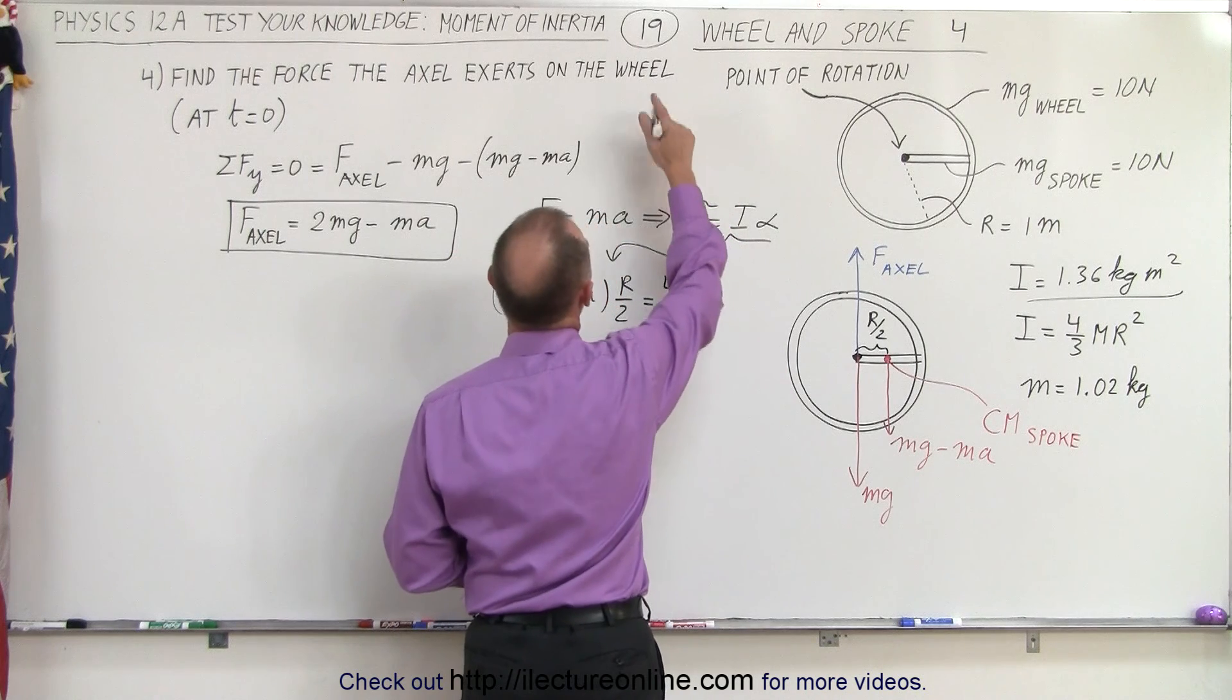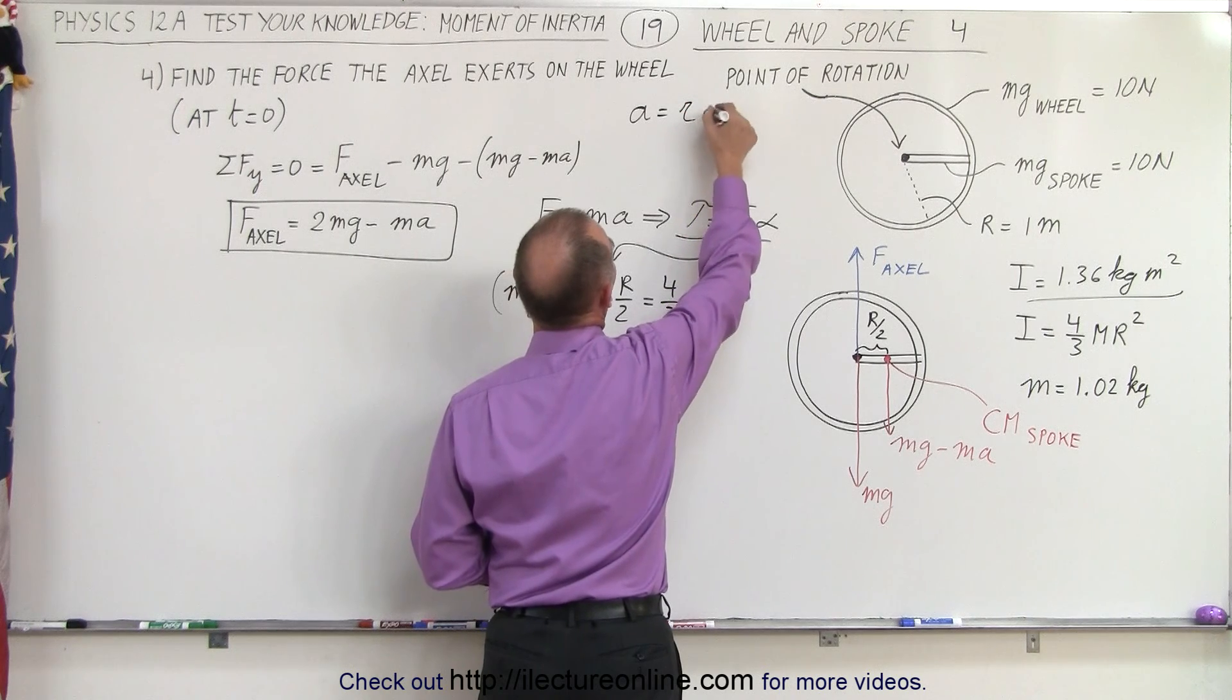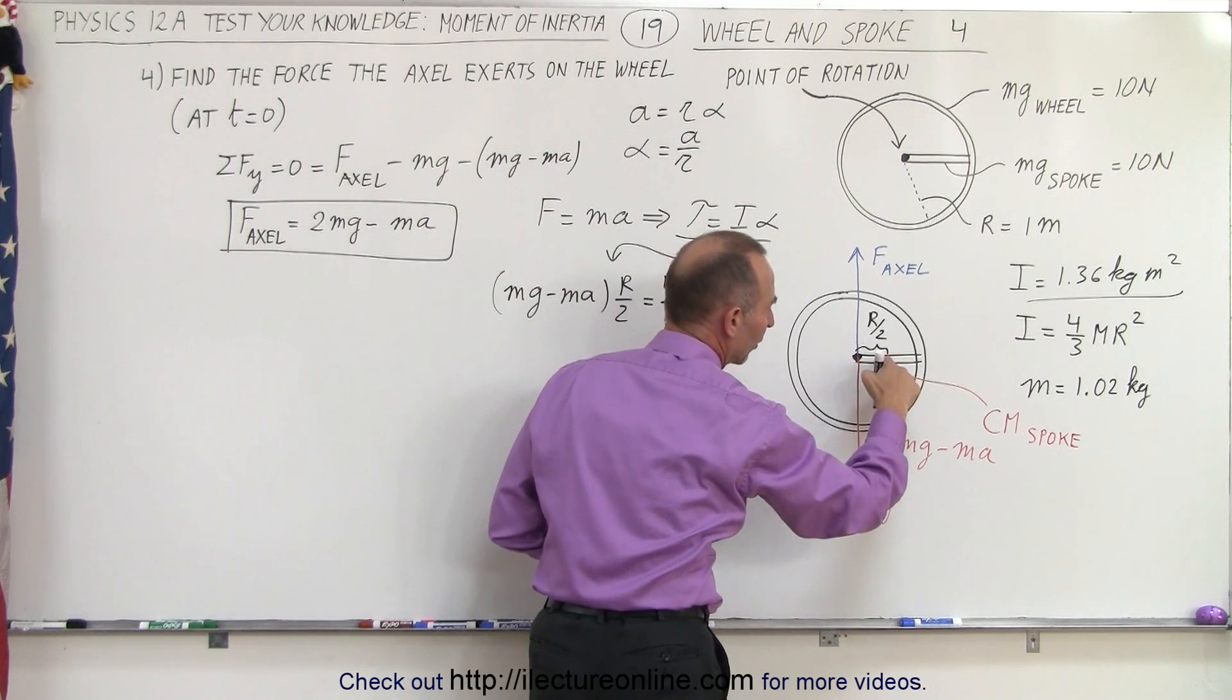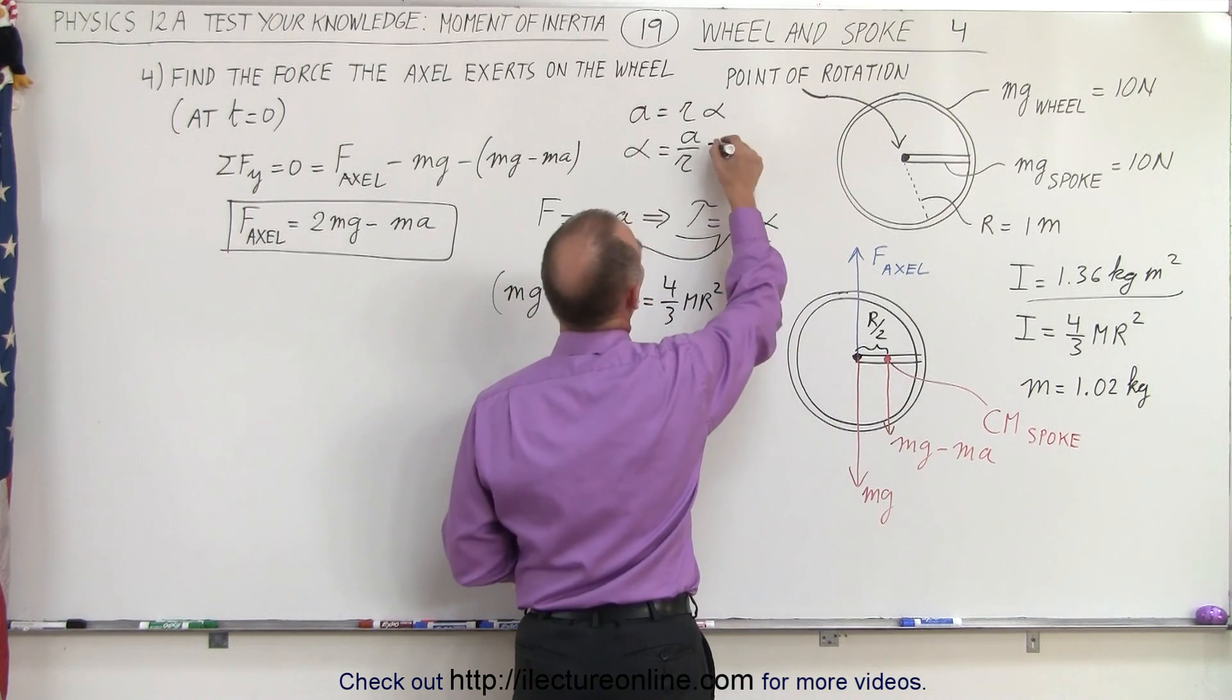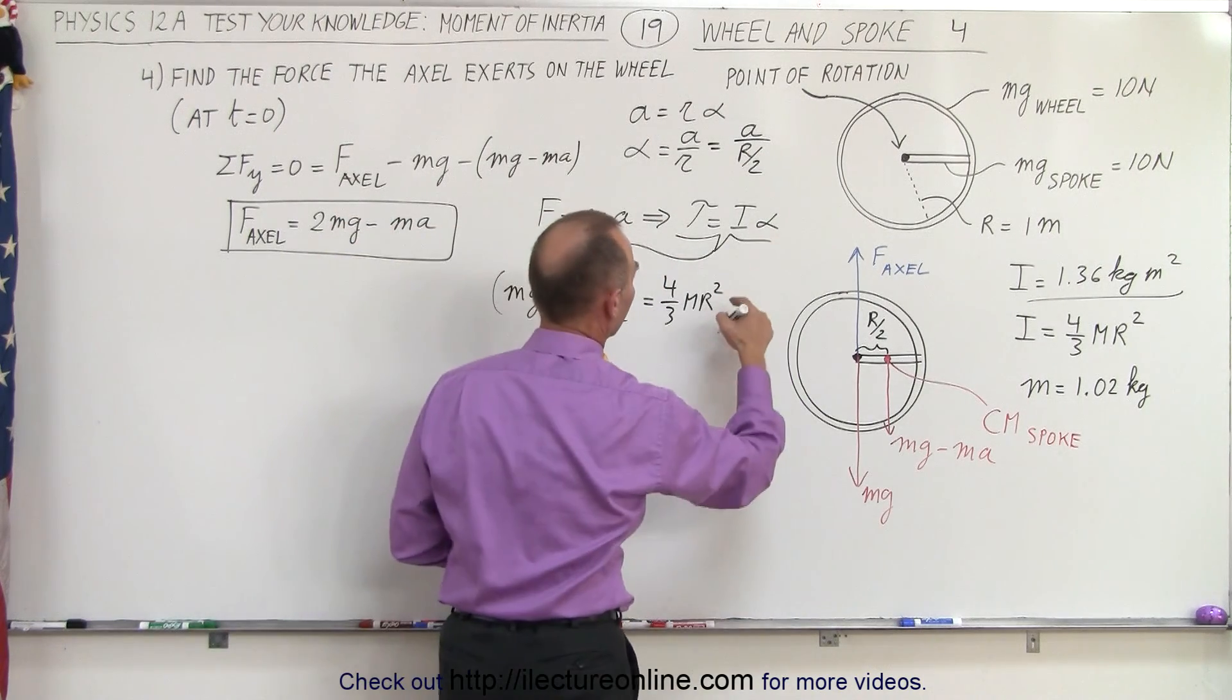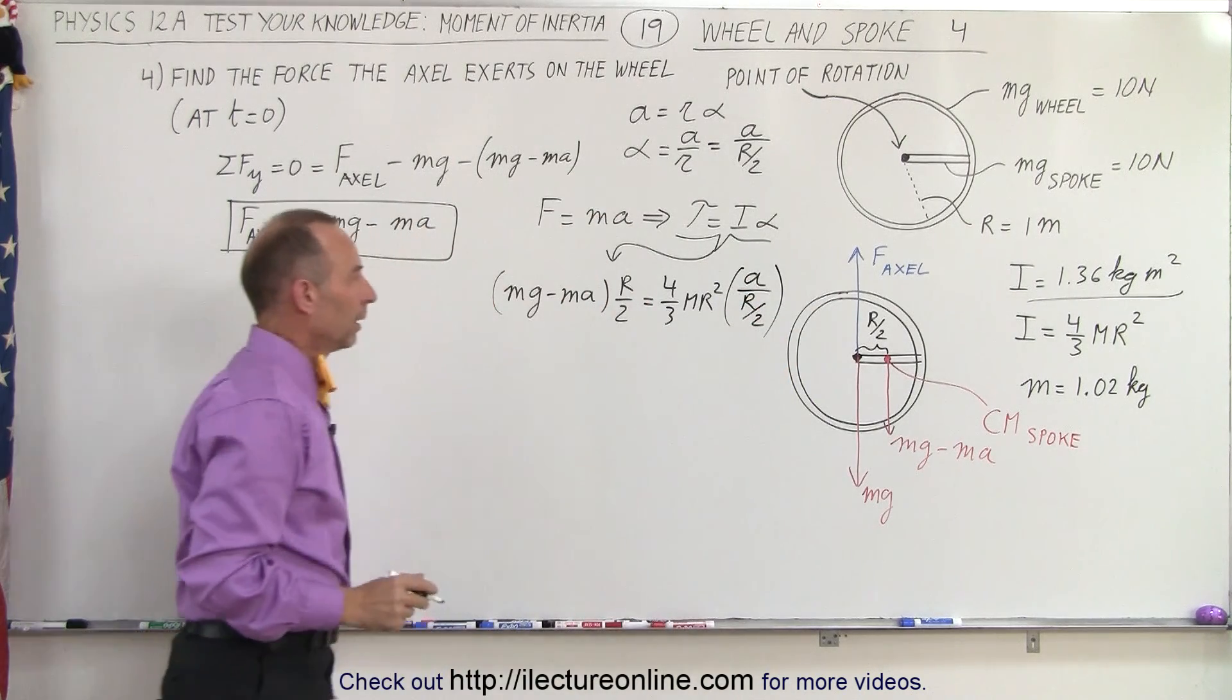Now, the angular acceleration, notice we can write that a equals the radius times the angular acceleration, or the angular acceleration is equal to a divided by r. But in this case, of course, we're worried about the angular acceleration or the acceleration of the center of mass, which is r over 2. So this is equal to a divided by r over 2, and that goes in here. Alpha right here, so that's times a divided by r over 2.